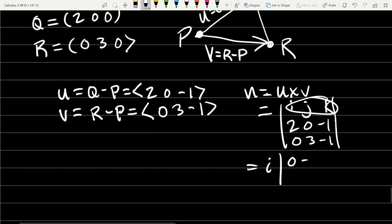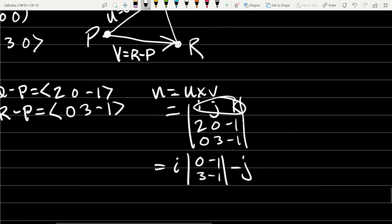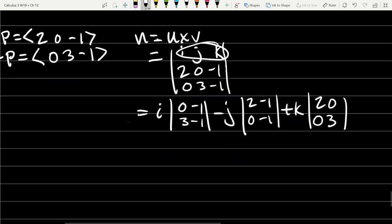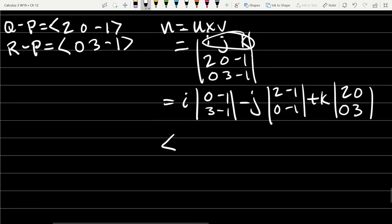So I times 0, negative 1, 3, negative 1. Minus J, so you're doing plus, minus, plus. Times 2, negative 1, 0, negative 1. Plus K times 2, 0, 0, 3. We've got 0 minus 0, so 0I, comma. We've got negative 2, and then make it negative again. It's positive 2. And then K will be just 6. Alright, 0, 2, 6. That is the vector, the normal vector right there, N.